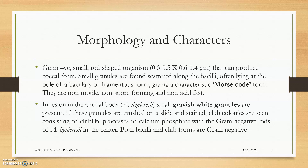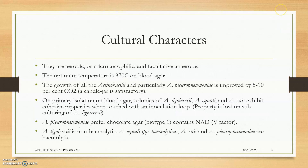They are non-motile — that is, having no flagella. They do not have spore-forming capacity and they are non-acid fast. In the lesions of the animal body, Actinobacillus lignieres producing wooden tongue disease will have small grayish-white granules present. These are club-like processes of calcium phosphate with gram-negative rods of Actinobacillus lignieres in the center — that is, the granule contains colonies of bacteria along with calcium phosphate. They are aerobic, micro-aerophilic, and facultative aerobic.